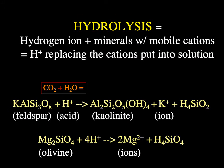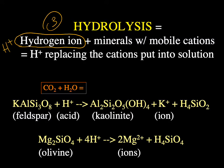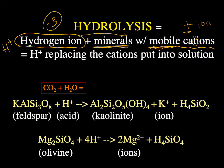The third process is hydrolysis, which sounds similar to hydration but is different. Hydrolysis is where you take a hydrogen ion — H⁺, usually from water or acid — and react it with a mineral that has mobile cations, meaning positively charged ions that are easily replaced. The H⁺ from the water or acid replaces those mobile cations in the mineral.